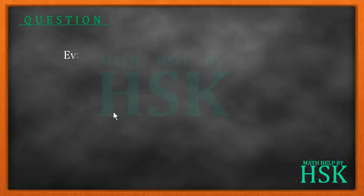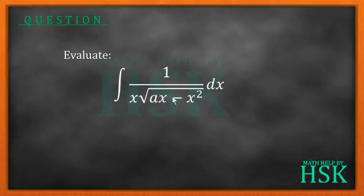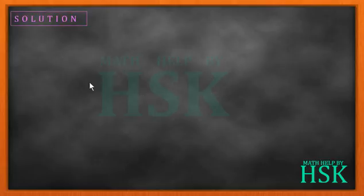Hello friends, the question is: we have to integrate the function 1 upon x into square root of ax minus x squared, with respect to x. Now to integrate this function, we need to determine what has to be done.